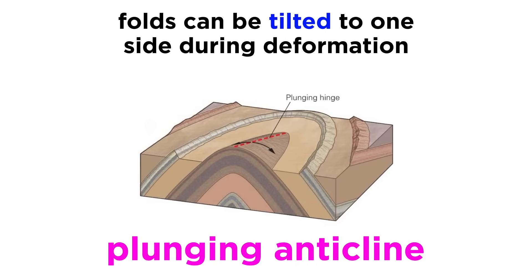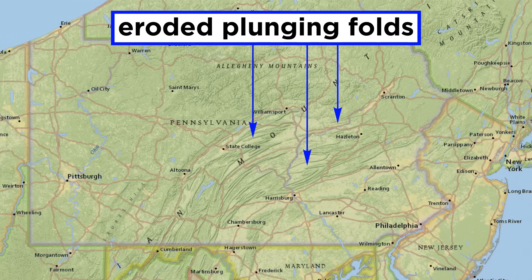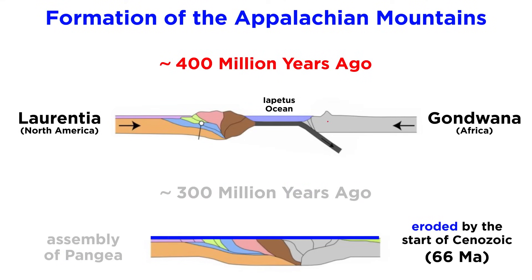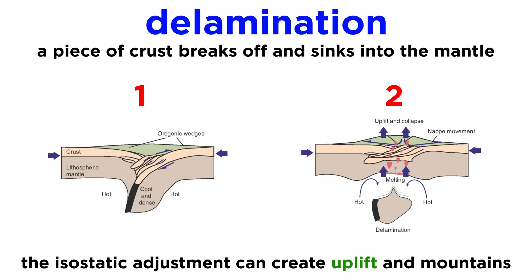Folds can also be tilted over on their sides during deformation, becoming either plunging or inclined. The zigzag ridges of the Appalachian Mountains in Pennsylvania perfectly represent plunging folds that have had their tops planed off during erosion. The Appalachian Mountains, which formed around 300 million years ago, were completely eroded into a flat plain near sea level by the beginning of the Cenozoic era. The ridges of today are caused by recent uplift due to isostatic adjustment that is hypothesized to have been caused by a piece of the bottom of the crust breaking off and sinking into the mantle, in a process called delamination.